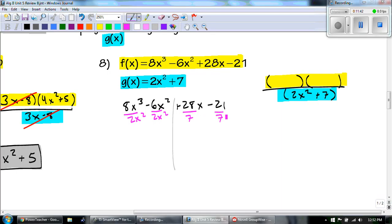And then when we divide those, we notice that the 3x minus 8s cancel. And then we're left with 4x squared plus 5.